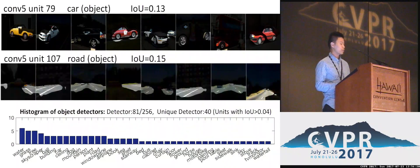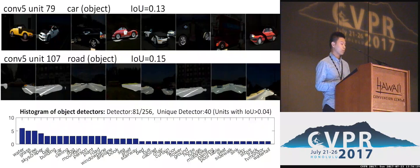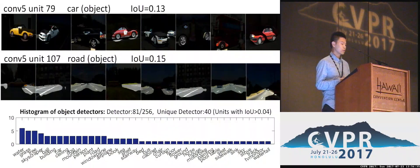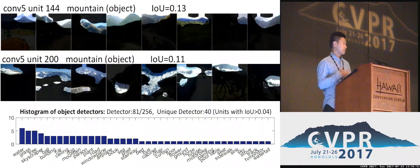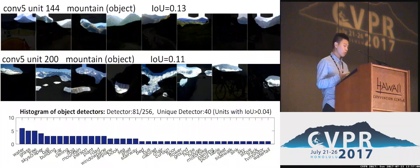I should emphasize that these units are just intermediate convolution kernels that emerge by themselves without any explicit object supervision. We also show two units detecting the same concept: unit 144 and unit 200 both detect mountain, but they detect different kinds — the first detects grassy mountains, the second detects snowy mountains. This may explain why the IOU is low, because each unit detects fine-grained attributes of the same concept.